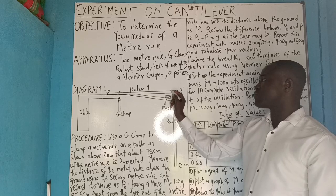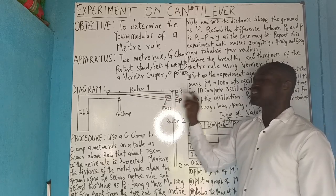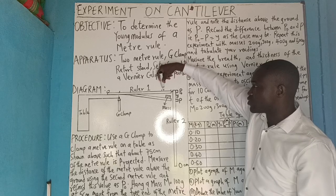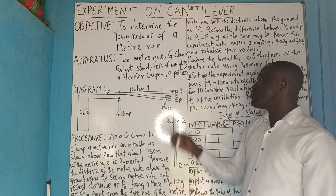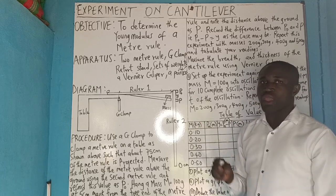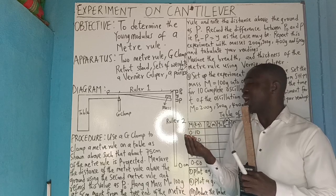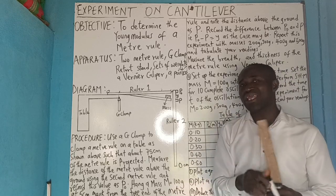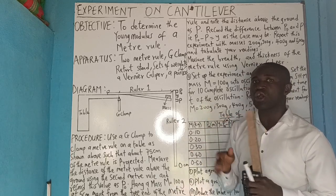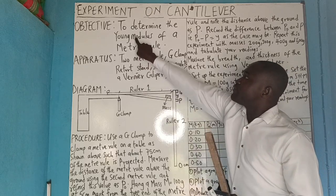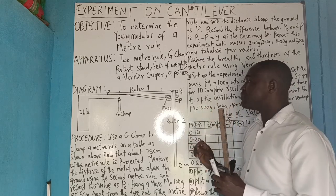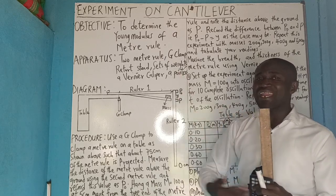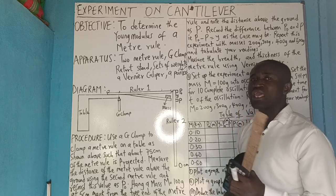Then hang a mass M equals 100 grams at 5 cm from the free end of the meter rule. Calculate 5 cm from the free end and put your mass on it. So when you put the mass on it, something will happen — that mass has weight and it will try to depress or bend the meter rule. If you get a higher Young's modulus, it means that meter rule is very stiff.